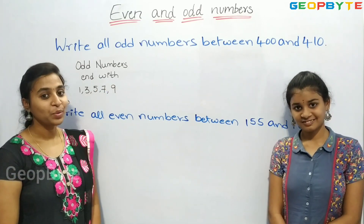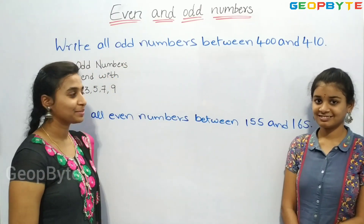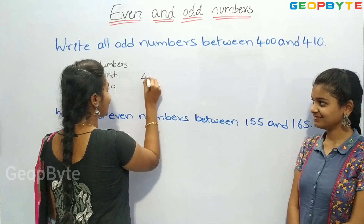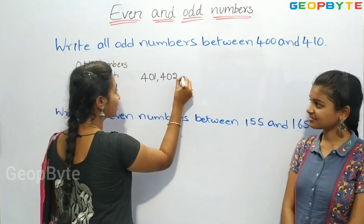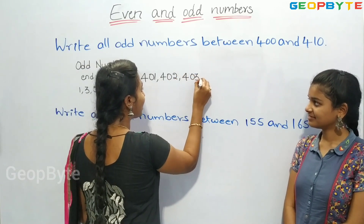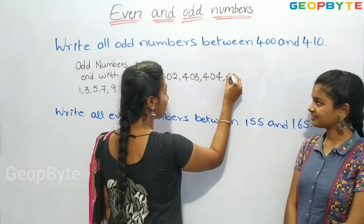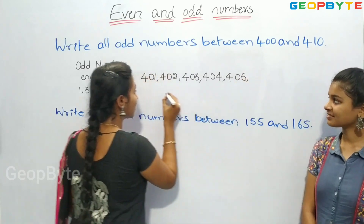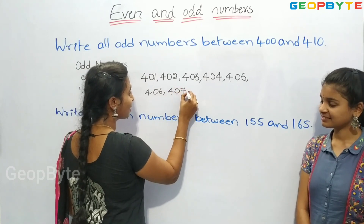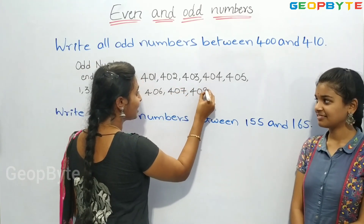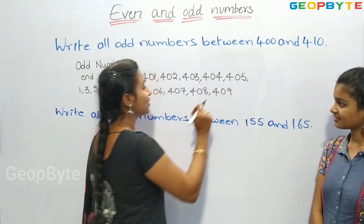Let us write down the numbers between 400 and 410: 401, 402, 403, 404, 405, 406, 407, 408, 409.